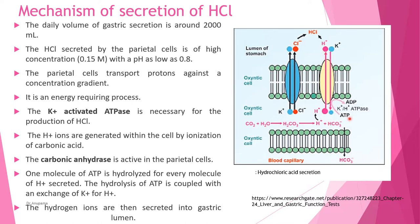This is an energy-requiring process. Potassium-proton ATPases are required for the production of HCl. The protons are generated within the cell by the ionization of carbonic acid — carbonic anhydrase is active in the parietal cells. One molecule of ATP is hydrolyzed for every molecule of proton secreted. The hydrolysis of ATP is coupled with exchange of potassium ions for protons, and the hydrogen ions are then secreted into the gastric lumen.